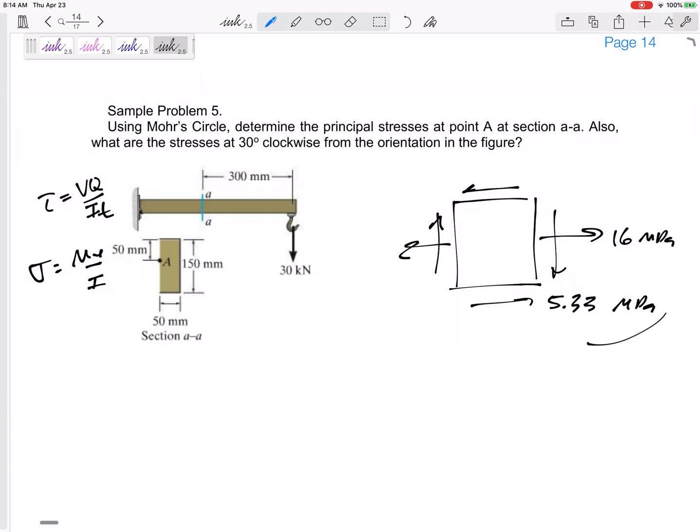You should get tension of 16 MPa and a shear stress 5.33 MPa right here and no sigma Y. But anyway, for the final exam, I'm going to start you with this one. I'm going to give you an element, give you all the stresses drawn on there and then ask you to draw the Mohr's circle and then maybe determine the principal stresses. Also, what are the stresses at 30 degrees clockwise?